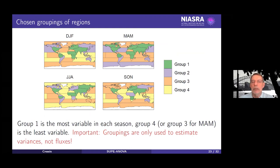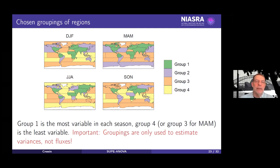There's group one, group two, group three, and group four for three out of the four seasons — December-January-February, March-April-May, June-July-August, and September-October-November. The colour scheme tells you: group one is the most variable, and most of those are over land; the least variable are over the oceans. It's not totally the same across seasons, as we might expect — seasons might give different groupings.